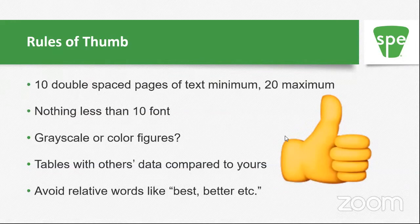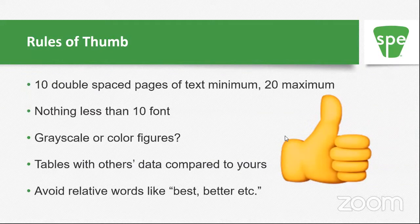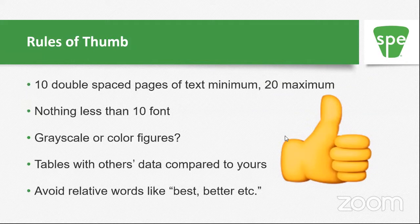Rules of thumb: 10 double-spaced pages of text minimum, 20 maximum. Nothing less than 10-point font so people can see it. For figures, use grayscale in general if you're going to use a print journal — they'll charge you for color. I use grayscale to distinguish between different sets of data. People will use color because the online version shows it, but make sure that in the print version, which will be black and white, you can still distinguish between data.